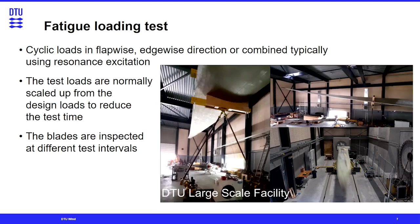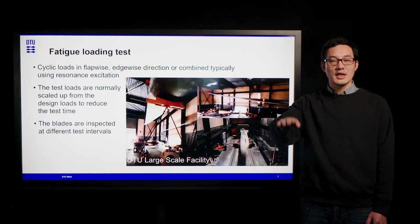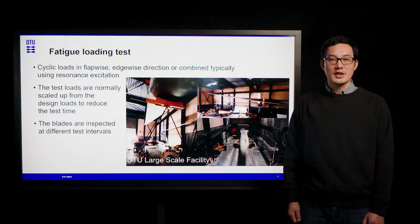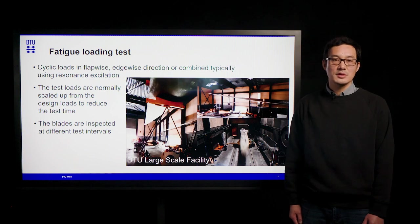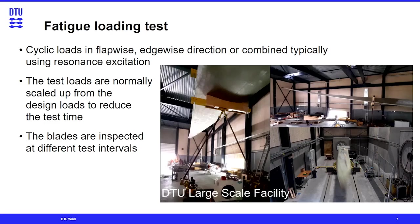Fatigue loading tests are typically conducted by applying cyclic loads in the flapwise or edgewise direction, or in combination, typically using resonance excitation, which means the blade is excited at its natural frequencies. The test loads are normally scaled up from the design loads to reduce test time. This is particularly important for large blades, where the natural frequency is very low. The blades are also inspected at different test intervals to check damage and failure propagation.